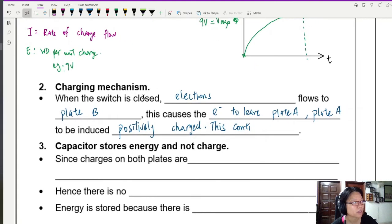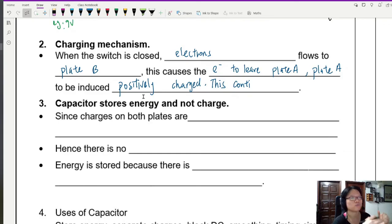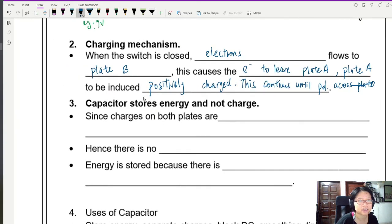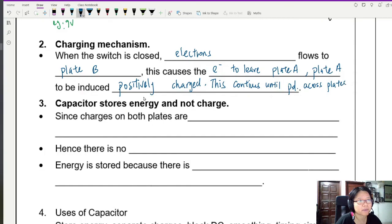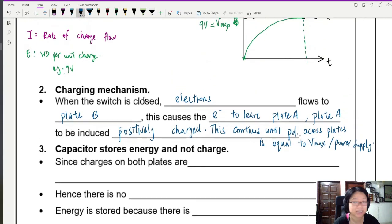Do you need to know the shape of the graph? Not really. But the idea of what happens when we connect a capacitor to a voltmeter. Because sometimes they will ask you to explain the charging mechanism. So, I'm going to zoom out a bit and we'll write about the charging mechanism. So, here you can see I've already started writing. When the switch is closed, electrons will begin to flow to plate B. And this causes the electron to leave plate A. Plate A will be induced positively charged and this continues until the potential difference across the plates or across the capacitor is equal to either the maximum potential or the power supply. So, you will see some of this when we do some past year questions. So, that would be the charging mechanism of the capacitor.